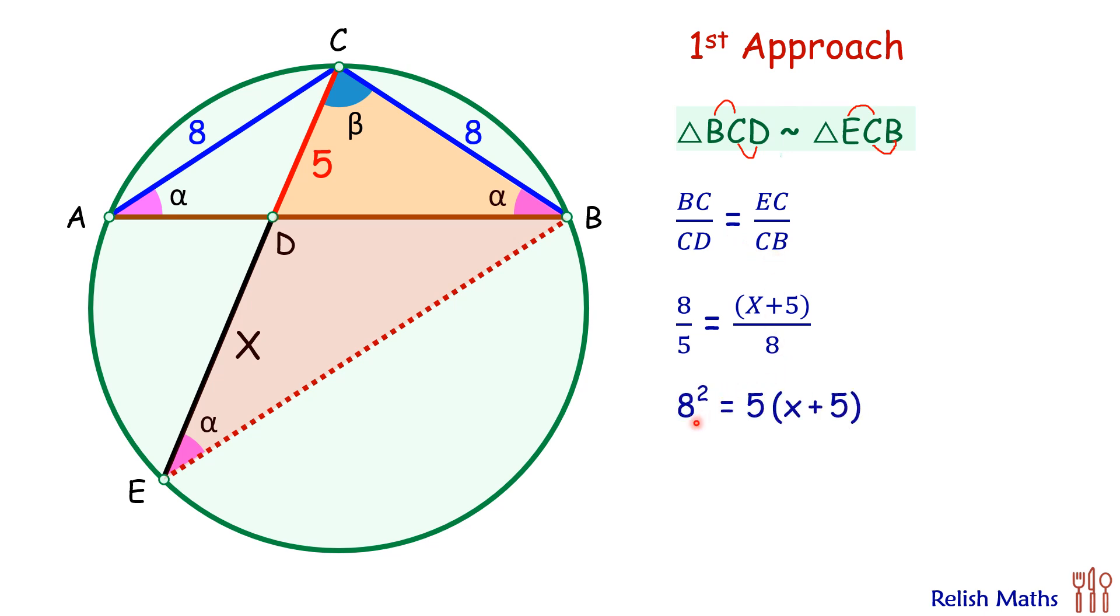Cross multiplying, we get 8 squared is 5 times of X plus 5. Solving it will get value of X as 7.8 cm and that's our answer.